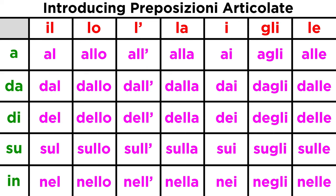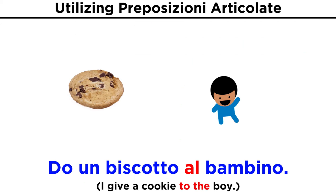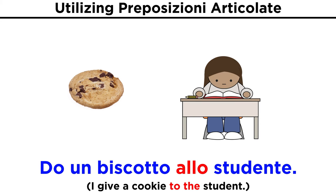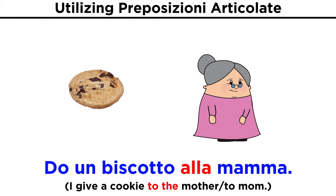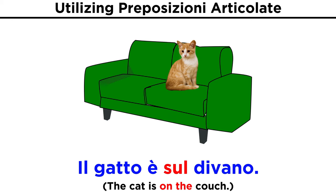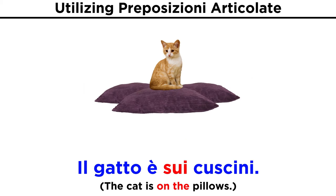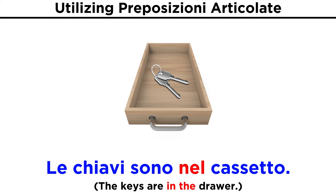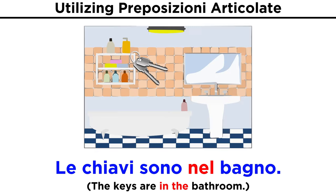Let's use some of these in sentences for context. Do un biscotto al bambino, ai bambini, allo studente, alla mamma. Il gatto è sulla poltrona, sul divano, sui cuscini, sullo sgabello. Le chiavi sono nel cassetto, nel bagno, nella borsa.